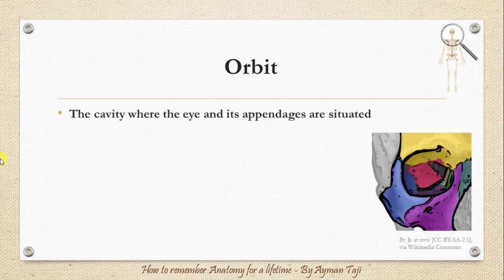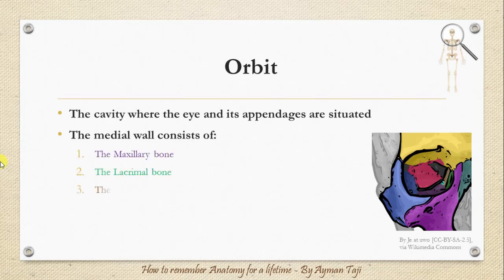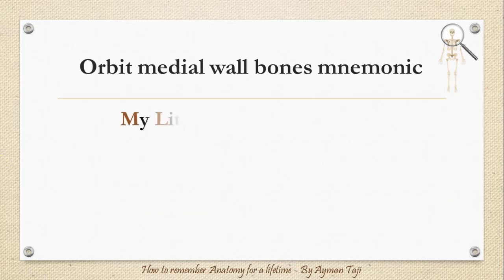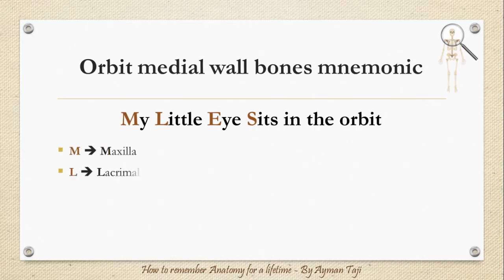Finally, the orbit, which is the cavity where the eye and its adnexa are situated. The maxillary bone, lacrimal bone, ethmoid bone, along with a small part of the body of the sphenoid bone, form the medial wall of the orbital canal, which is the thinnest wall of the orbit. To remember these bones, use the mnemonic: 'My little eye sits in the orbit' — maxilla, lacrimal, ethmoid, and a part of the sphenoid bone.